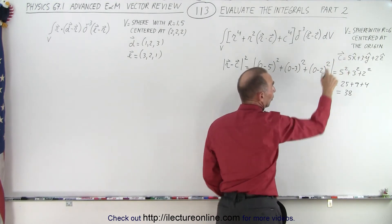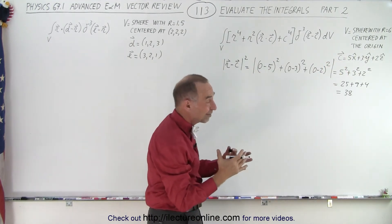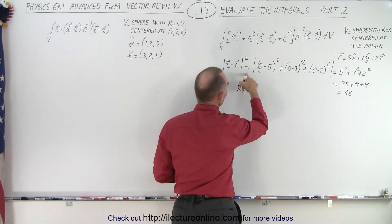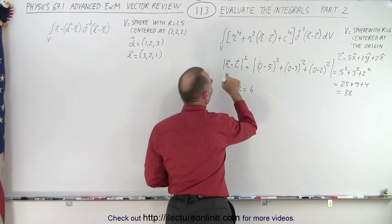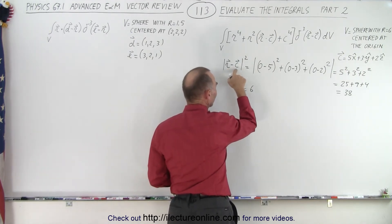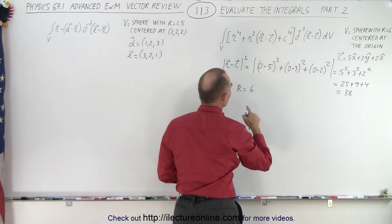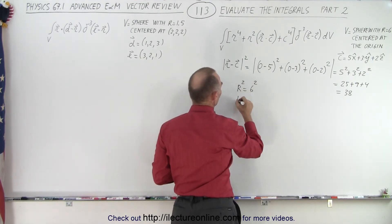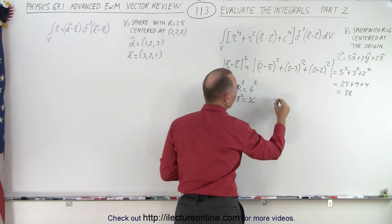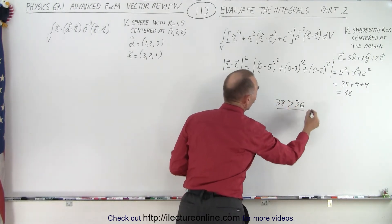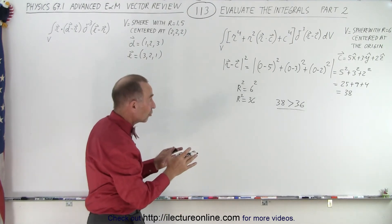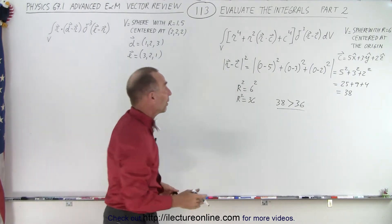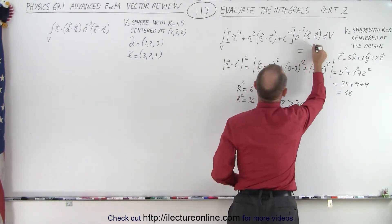Now, for the sphere over which we're integrating, the radius is equal to 6. We found the squared distance from the origin to where the c vector points is 38. Taking r squared gives 36. We realize that 38 is larger than 36, which means that the delta function does not reside inside the volume of integration, and therefore the integral is simply equal to 0.